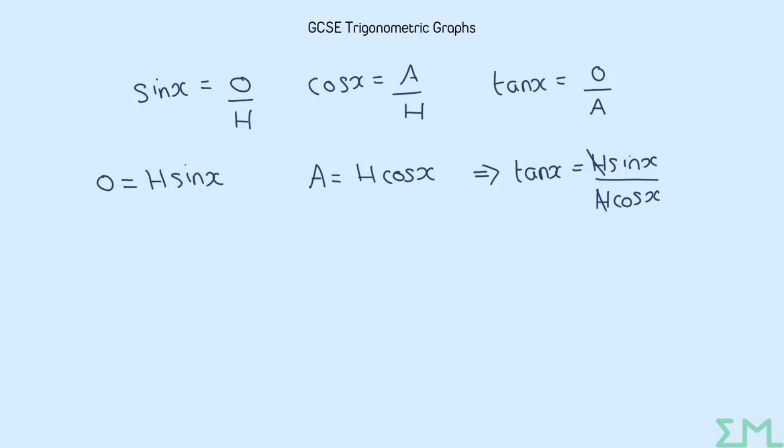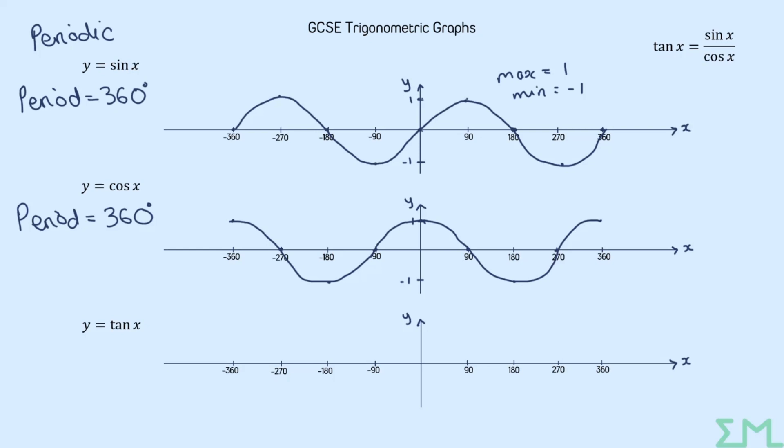Now the reason this identity is useful to us is because to get going on the tan graph we can have a look at what's happening on the sine and the cos graph. Now to think about when tan is zero, looking at the formula we just need to know when sine is zero. It doesn't matter what value cos takes, but if the numerator of a fraction is zero, then the overall value will be zero as well. So sin x was zero at zero, 180 and 360. So tan will also be zero in exactly the same places as the sine graph. So I'm just going to pop those in for this whole range.